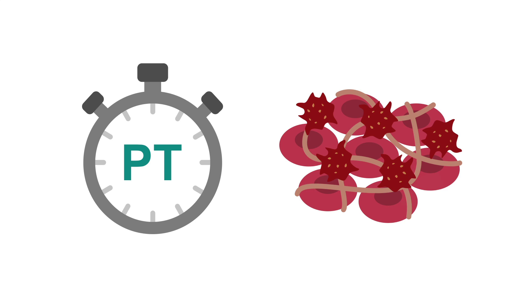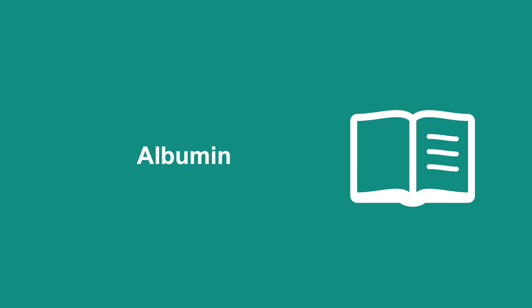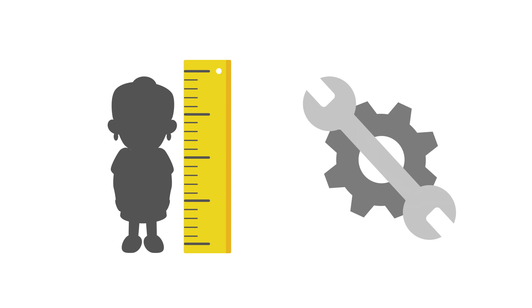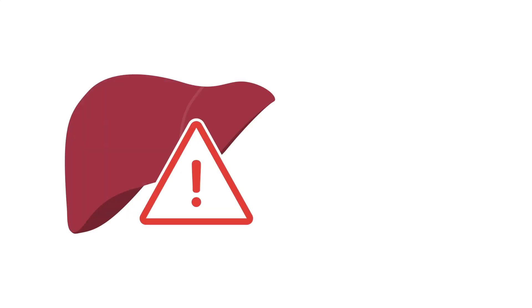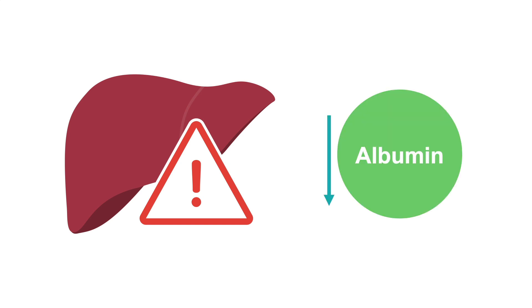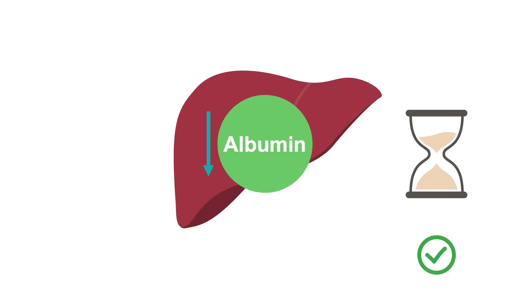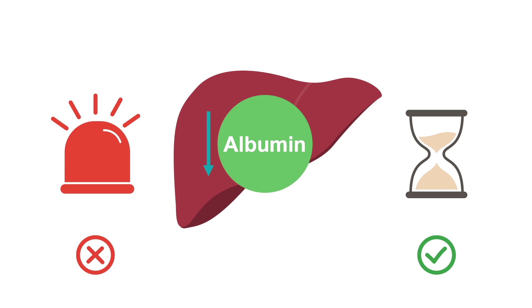Albumin is the most common protein found in the blood, used by the body for growth and tissue repair. When liver function is impaired over a prolonged period, albumin synthesis is impaired, resulting in low levels of albumin in the blood. Thus, hypoalbuminemia is a common finding in chronic liver disease, but not in acute liver failure.